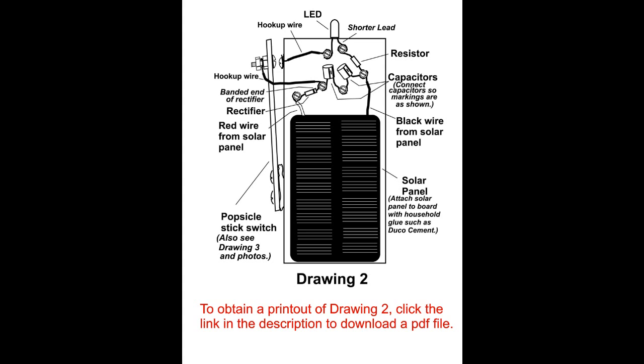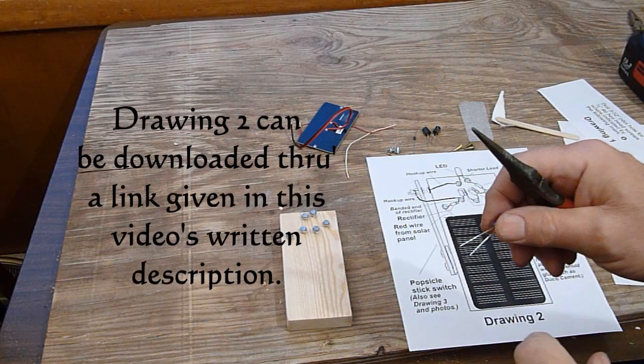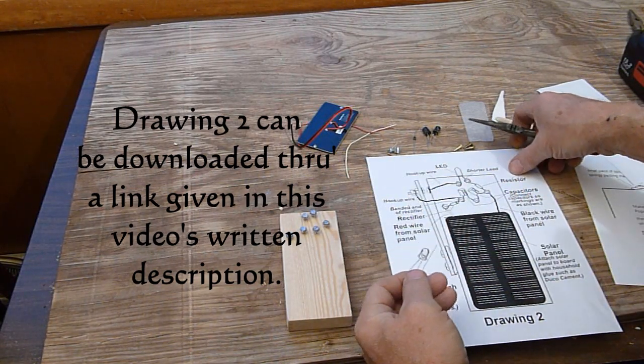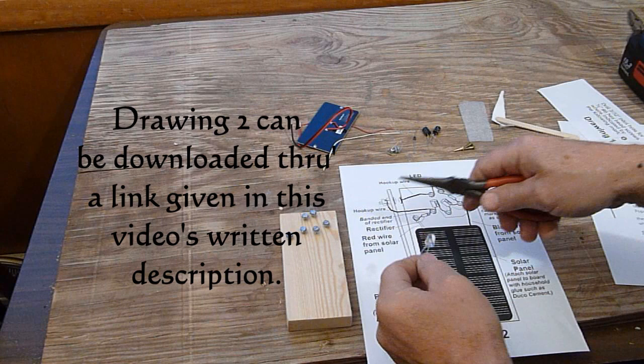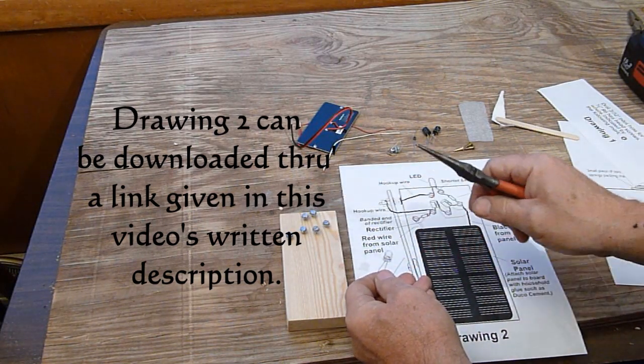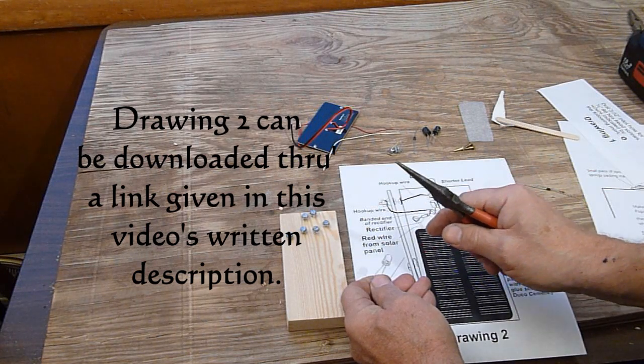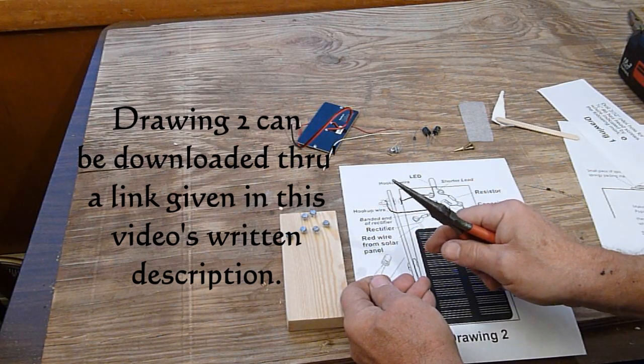Drawing two here shows which parts are connected where. The next step is to wire the parts. We use these screws here as terminals so we can connect the leads of the parts together along with the wires.